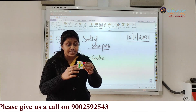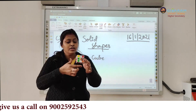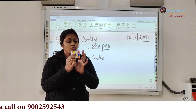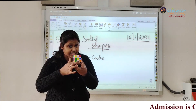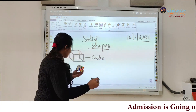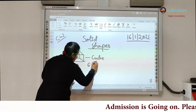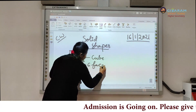So how many faces are there? Let's count: one, two, three, four, five, and six. Six faces. So a cube is having six faces.